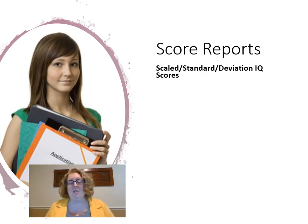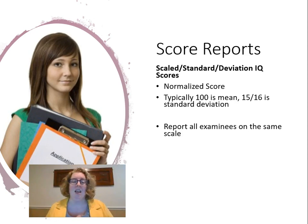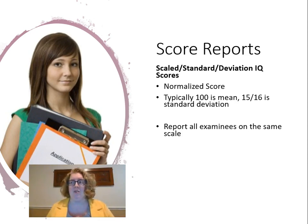Score reports include a scaled or standard score — sometimes called the deviation IQ score — which you can find on that normal curve distribution page from last week. It's a normalized score where 100 is the mean and 15 is the standard deviation. It reports all examinees on the same scale. We assume the standard score IQ wouldn't change over time — so even though at age five you'd get more questions right than at 15, your IQ relative to other five-year-olds versus other 15-year-olds would stay relatively stable.